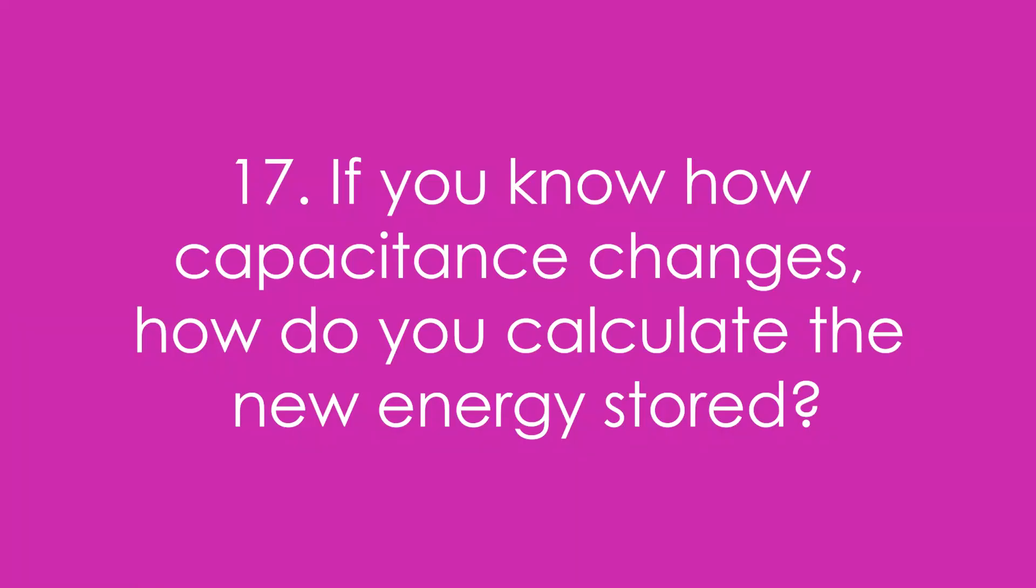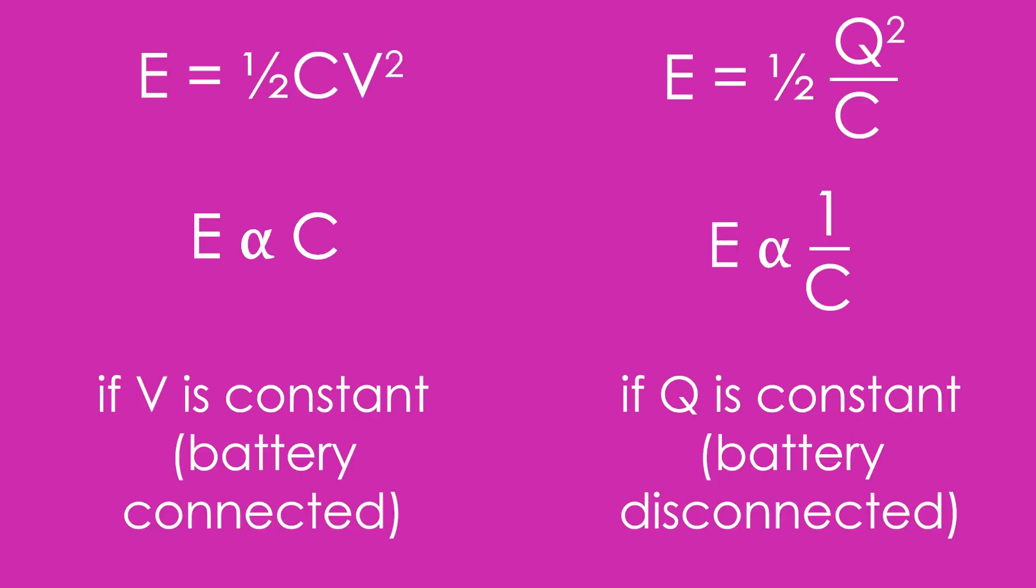Seventeen, if you know how capacitance changes, how do you then calculate the new energy stored? If it's still connected, that means V is staying the same, so you use E equals half CV squared. Or you can say E is proportional to capacitance.